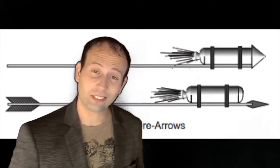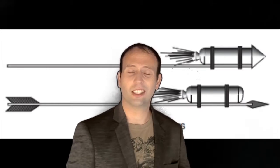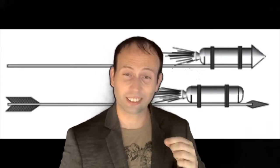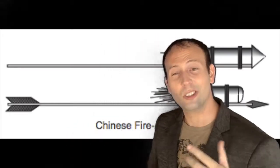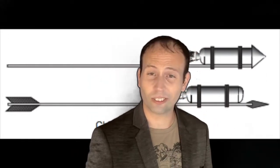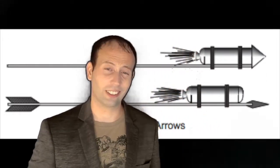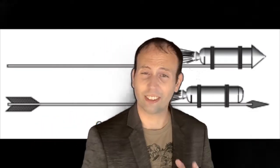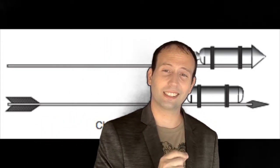At some point, they attached bamboo tubes to arrows and launched them with bows. Soon they discovered that these gunpowder tubes could launch themselves just by the power produced from the escaping gas.